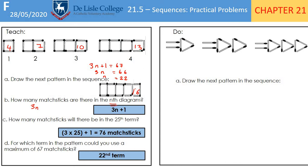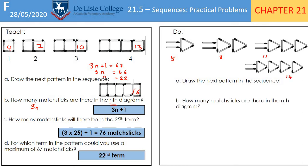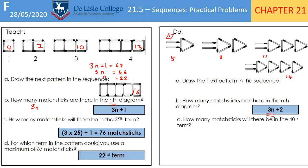For the student practice question: you should have noticed that each time you're adding another 3 matchsticks, so the sequence is 5, 8, 11, 14. Pause the video and find the nth term. The answer is 3n + 2, because the common difference from 5 to 8, 8 to 11, and 11 to 14 is 3 — that's where the 3n comes from. If n is 1, 3 times 1 is 3, but we want 5, so we add 2. How many matchsticks in the 40th term? Substitute 40 in: 3 times 40 is 120, plus 2 is 122 matchsticks.